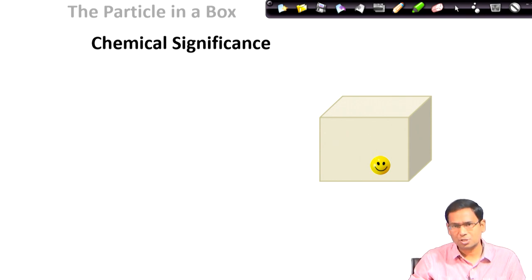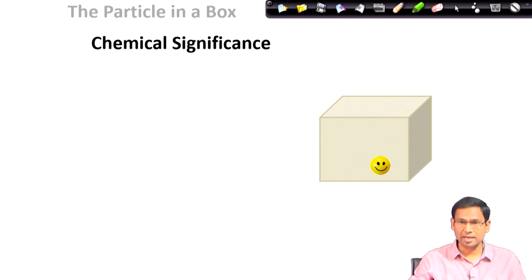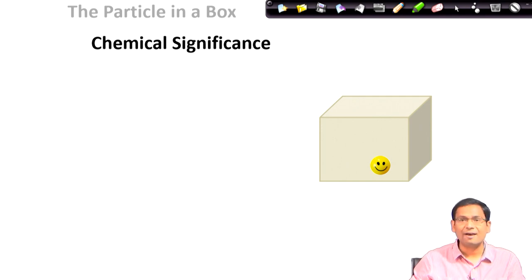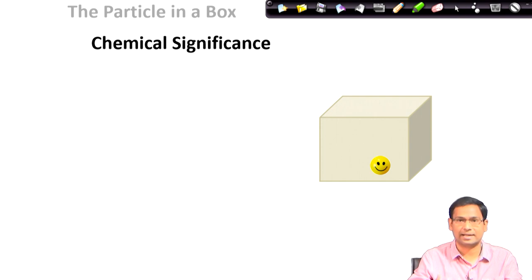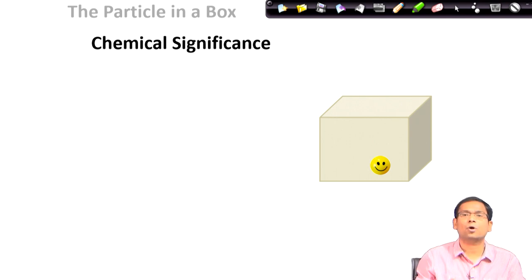We know from atomic structure that an atom is composed of a central nucleus and one or many electrons going around it. The electrons are under the influence of the nucleus — they are bound by the field that the nucleus creates. So an atom essentially represents a particle in a box, where the particle is an electron and the box is the nuclear field that the atom produces.